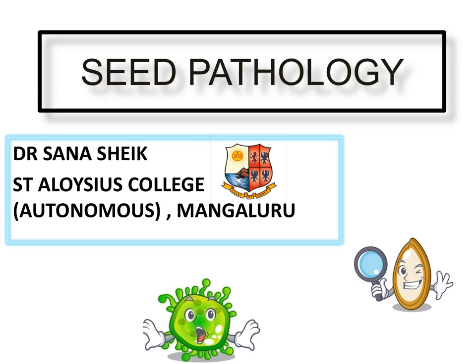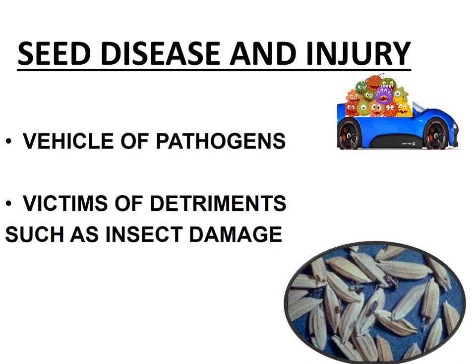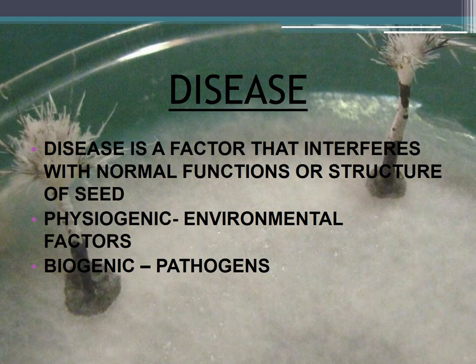Seed is a living entity playing an important role in the agriculture sector. It can inevitably be a vehicle of pathogen — it can carry pathogens with or without being diseased — and it can be a victim of detriments other than diseases, a very good example being insect damage. A disease is a factor that interferes with normal functions of a particular organism; in the case of seed, it interferes with the normal functions or structure of the seed. It is classified into two types: physiogenic diseases and biogenic diseases.